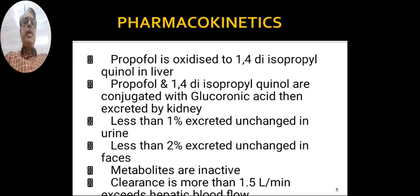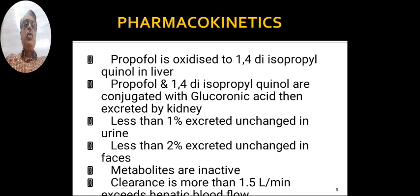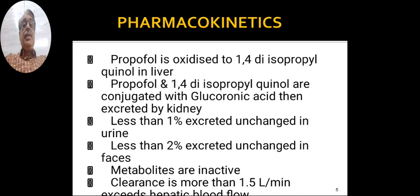Now we will see the pharmacokinetics. Propofol is oxidized to 1,4-diisopropylquinol in the liver. Propofol and 1,4-diisopropylquinol are conjugated with glucuronic acid and then excreted in the kidney. Less than 1% is excreted unchanged in urine, and less than 2% is excreted unchanged in feces. The metabolites of propofol are inactive.